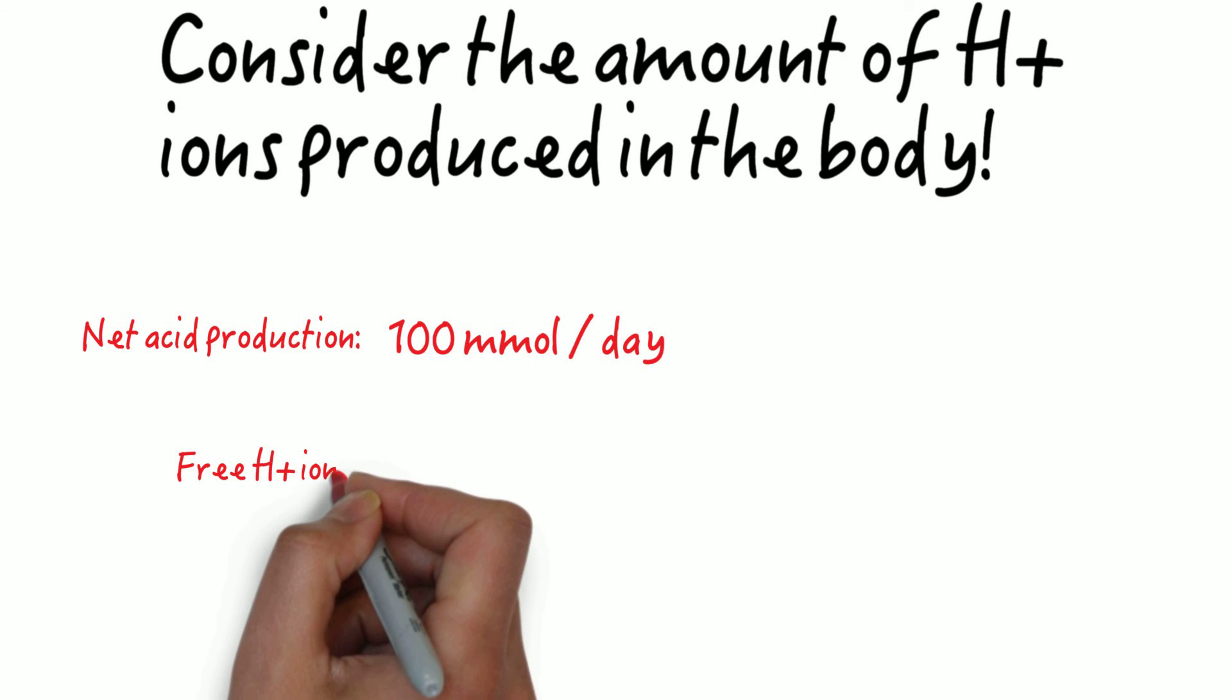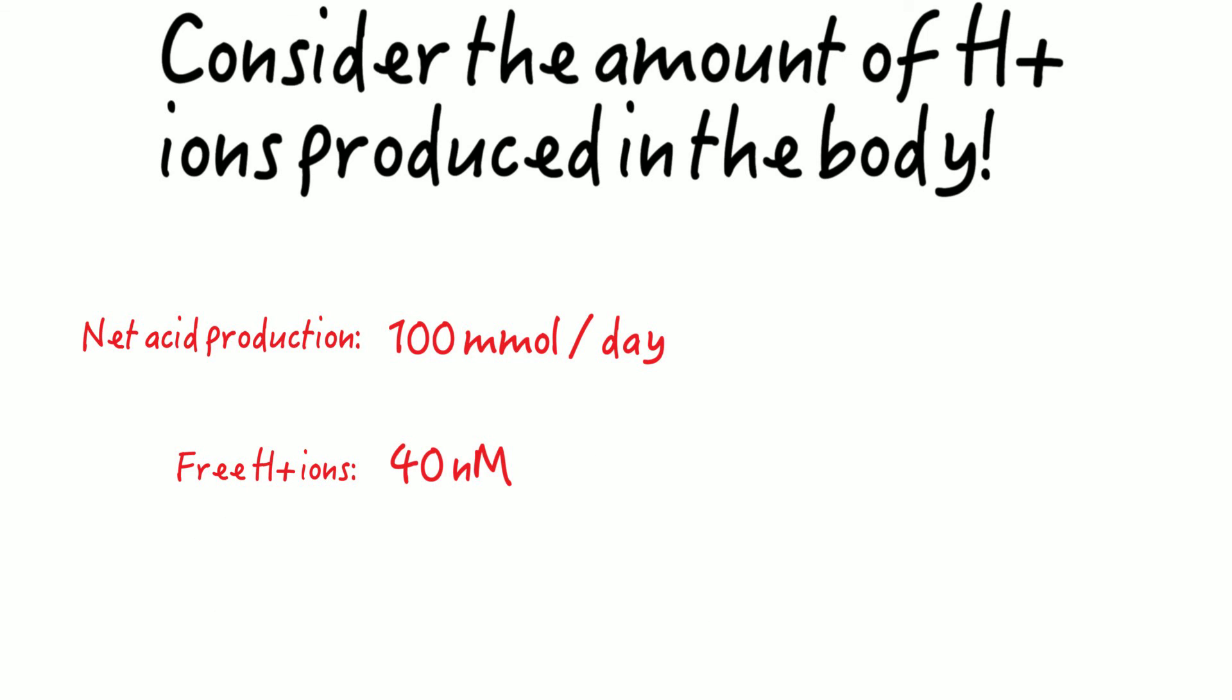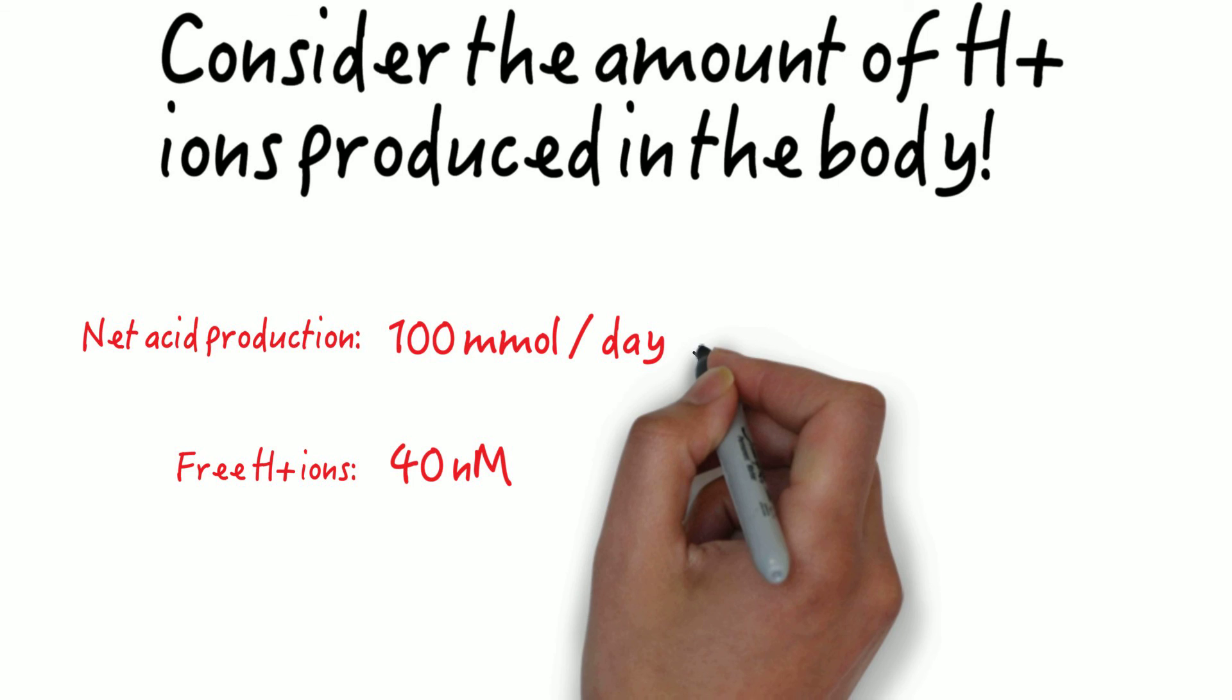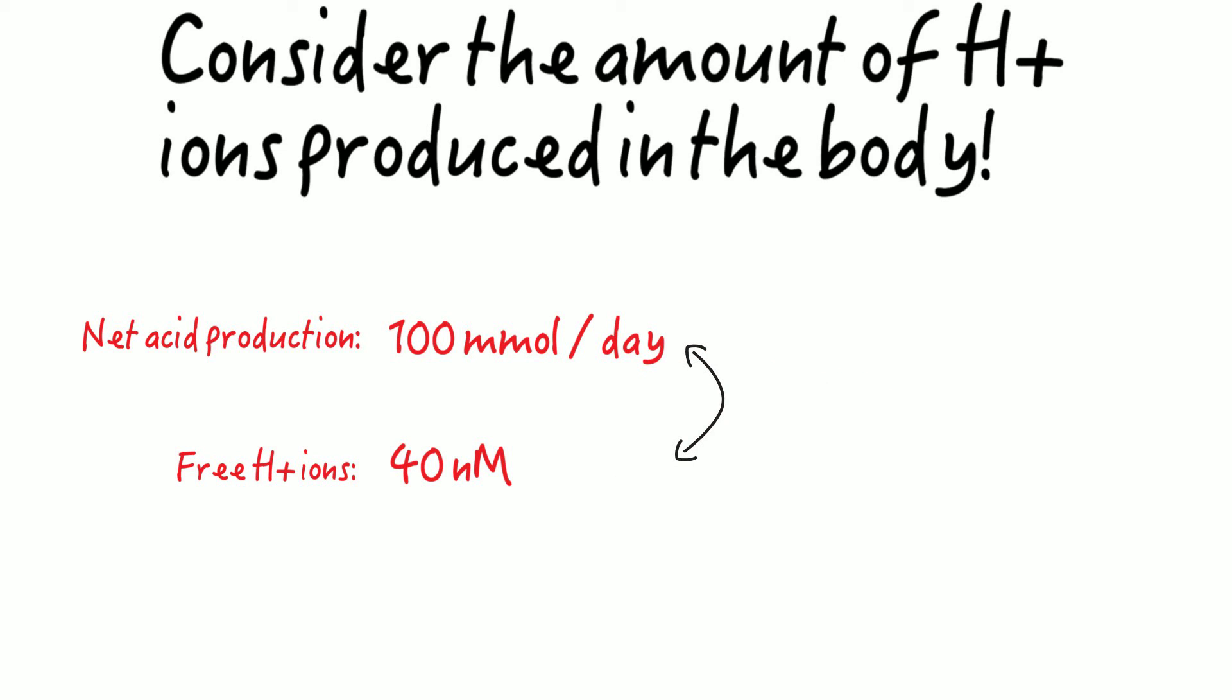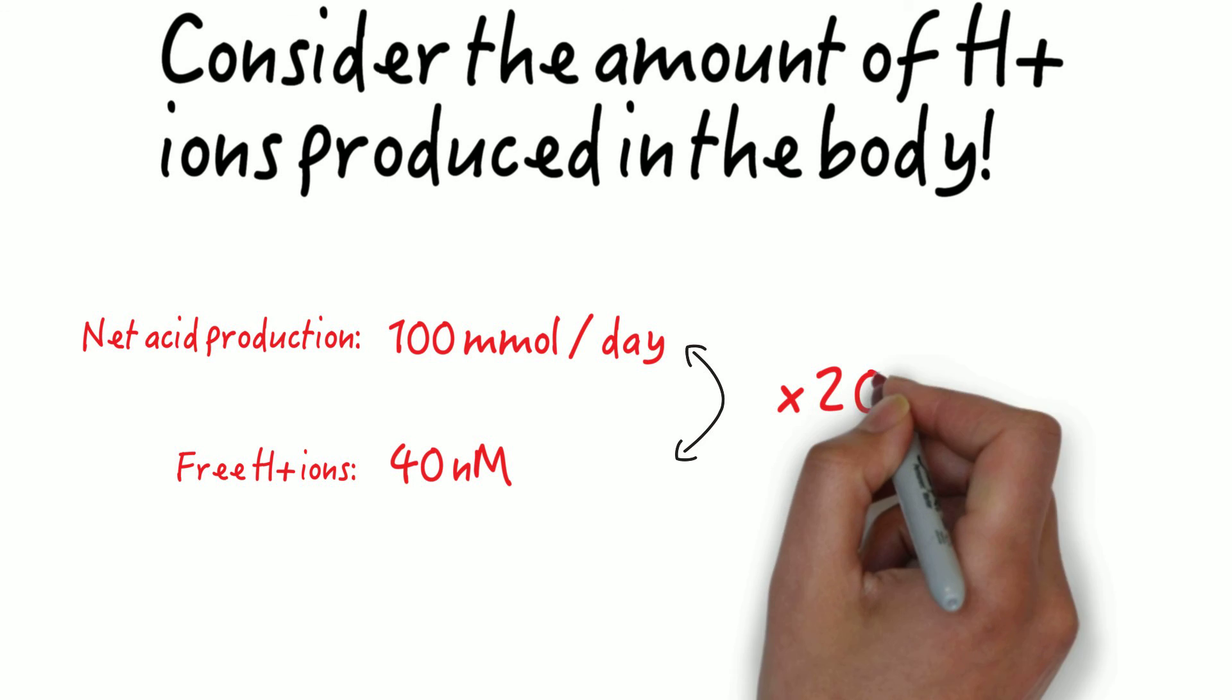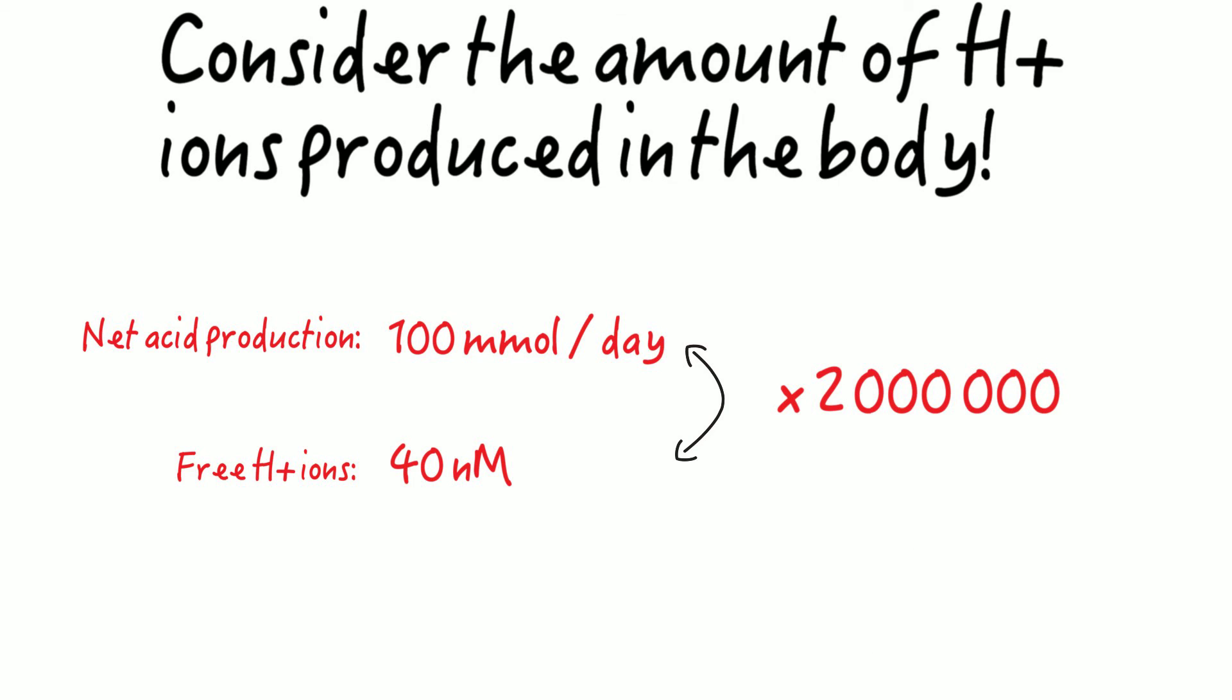As we said before, the concentration of free hydrogen ions is in the range of 40 nanomoles. So the difference between the acid production of 100 millimoles and the concentration of free hydrogen ions of 40 nanomoles is in the range of 2 million. That's what the body has to accomplish each and every day. In order to maintain this huge gradient, the hydrogen ions need to be buffered and excreted from the body.